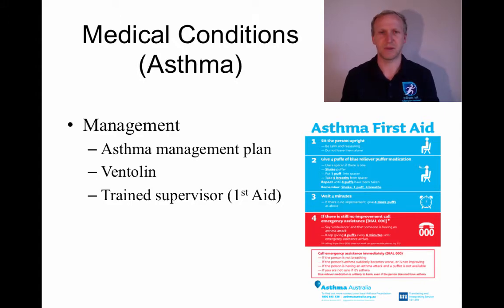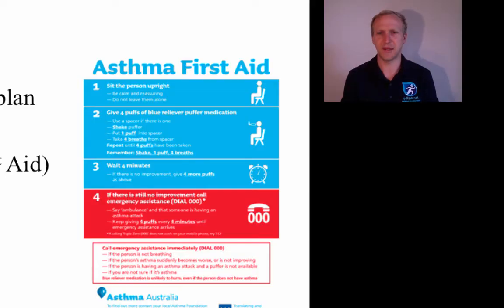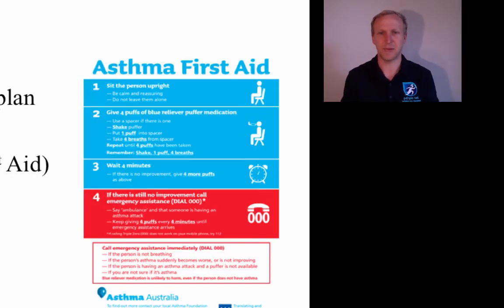Always have a Ventolin or reliever puffer available so they can administer first aid if required. The supervising person should have their first aid certificate and be trained in treating asthma attacks. To treat an attack: sit the person up, give four puffs of their reliever puffer using a spacer — shake the puffer, one puff into the spacer, four breaths — repeat until four puffs are taken, wait four minutes, and if there's no improvement, repeat the process and call an ambulance.